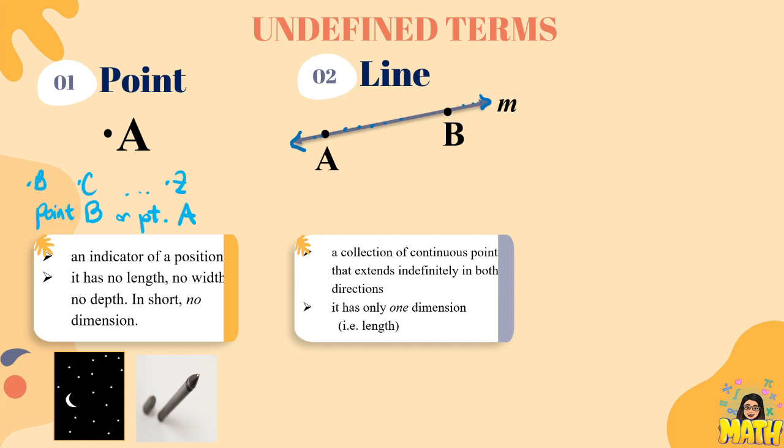A line has only one dimension which is usually the length. Para pangalanan ang line, we simply use the symbol of a line and we use two points that lie on the line. So here, we have line AB using that symbol or you can just write the word line and use two letters. So this is line AB.